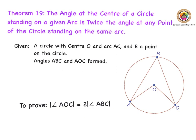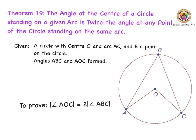We are going to look at this circle — here is what we've been given. We want to prove that this angle at the center, angle AOC, is twice the size of the angle up here formed between angle ABC. That's what we have to prove.